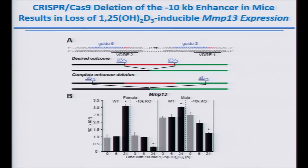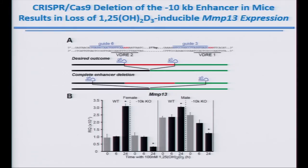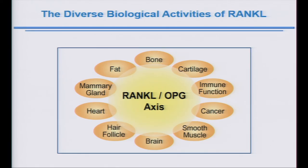We are introducing all these mutations into the mouse to see the in vivo consequences. We've deleted the minus-10K region in the mouse and looked at cells derived from the skeleton. In wild-type mice, 1,25-D3 induces a strong upregulation of MMP13. But when you delete the minus-10K region, you lose inducibility and gain suppressability — confirming what we've seen in cell lines. We're hoping to see similar and perhaps more interesting things with the other deletions in the mouse.